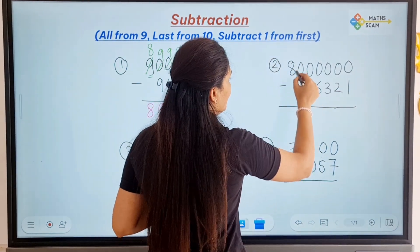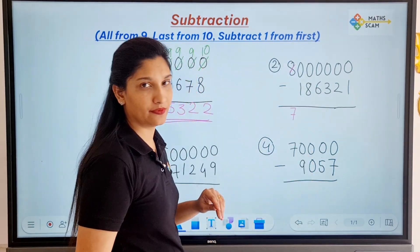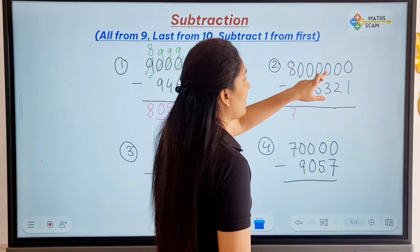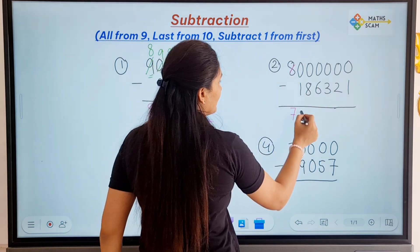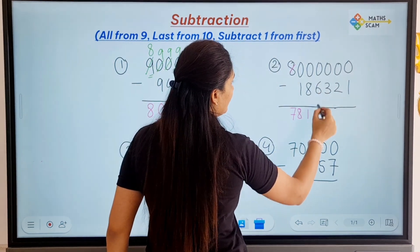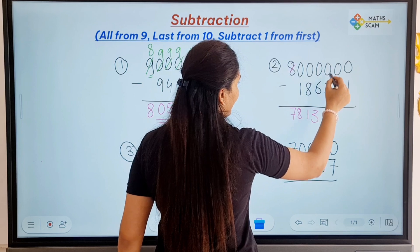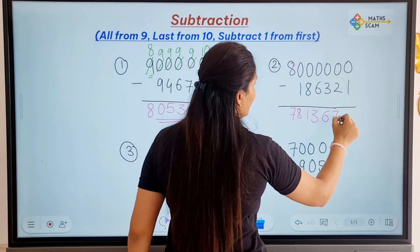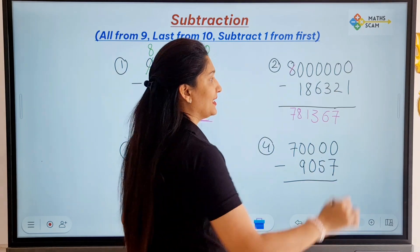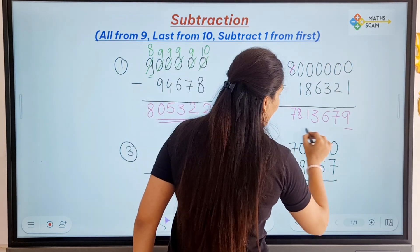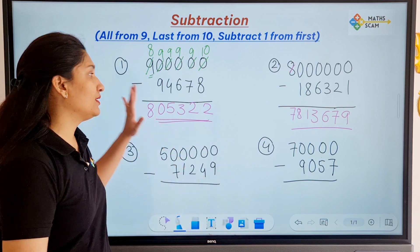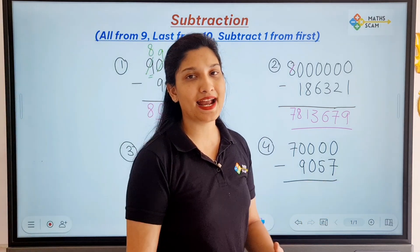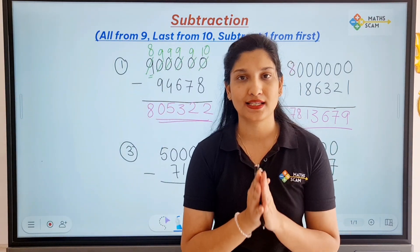So this is going to be 7, so 7 will be as it is. The middle all digits are 9: 9 minus 1 is 8, 9 minus 8 is 1, 9 minus 6 is 3, 9 minus 3 is 6, 9 minus 2 is 7, and the last digit now, 10 minus 1 is 9, and that is your answer. Either you can do it from left side or right side, you are getting the same answer.